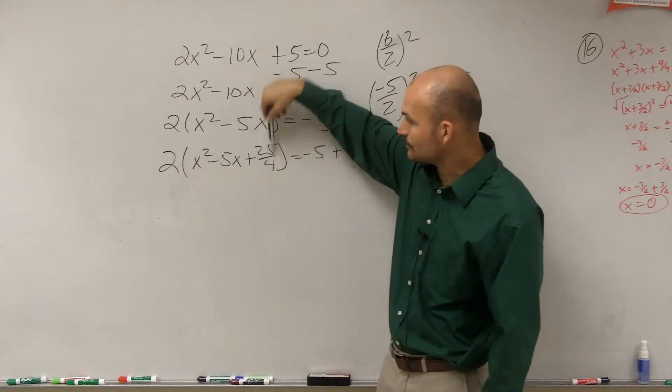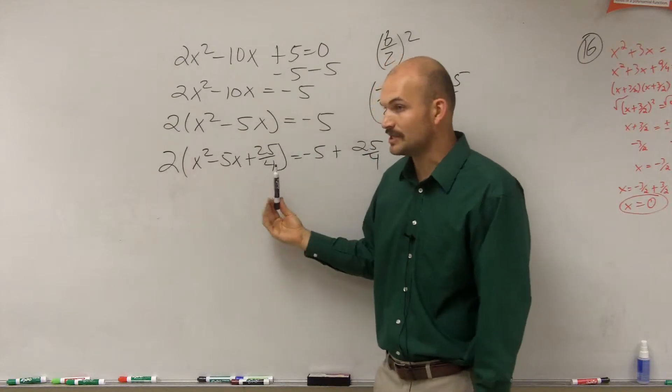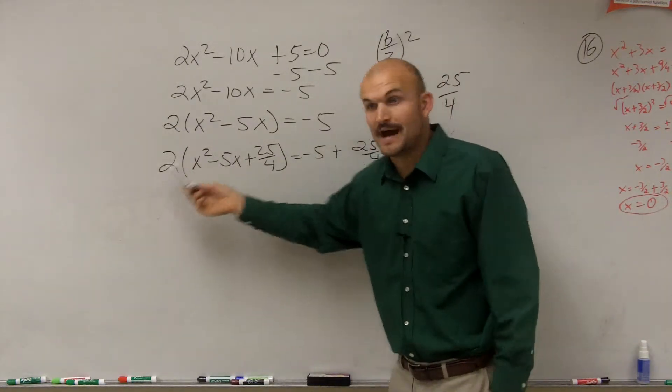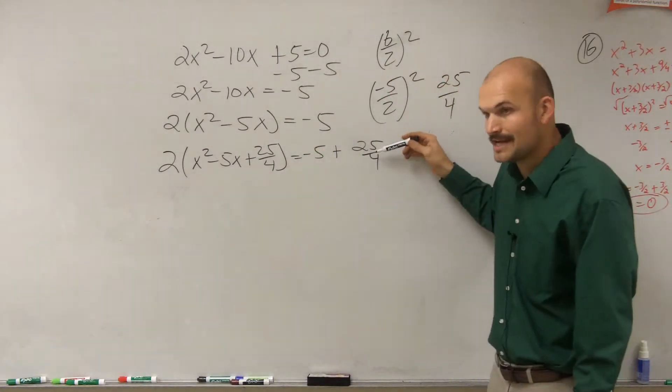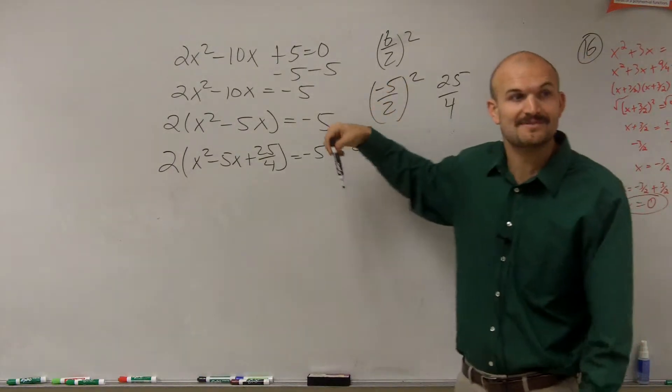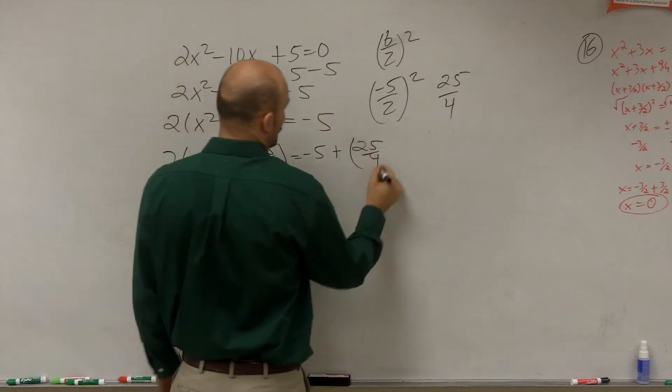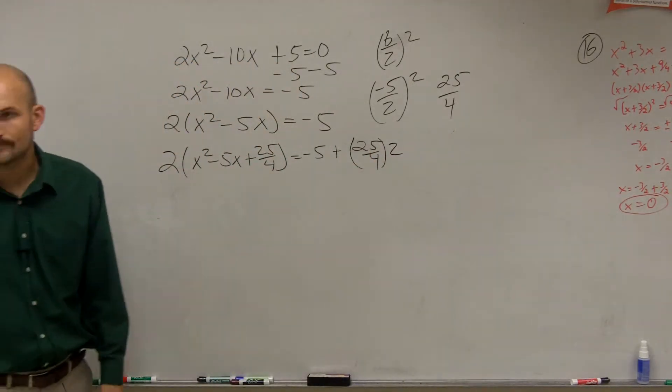The real value, I know the value right here is 25 over 4. But the value on this side of the equation is 25 over 4 times 2. So if I need to have equal values, I just can't say I'm going to add 25 over 4. I have to make sure I add 25 over 4 times 2. So I'm just going to multiply it by 2 over there.